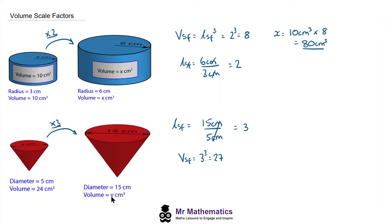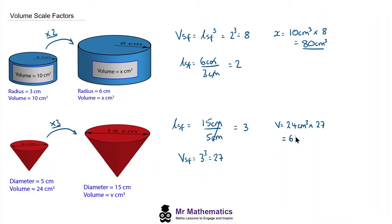So the volume of the larger cone, V, will be 24 centimeters cubed multiplied by the volume scale factor of 27, which gives 648 centimeters cubed.